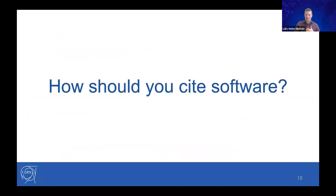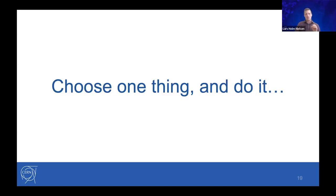Back to the initial question — now that I've motivated everybody that there's no point in citing software — how should you cite software? The one thing I want you to take away is: just choose one of the things you hear in today's presentations and do it. We as infrastructure providers are all working on solutions to most of these problems. This is a huge chain-link system, and if we don't all improve, then the entire system doesn't improve. Each one of you has to choose just one thing and do it.